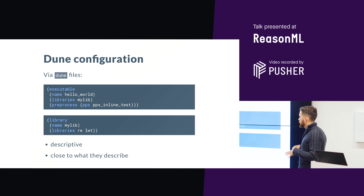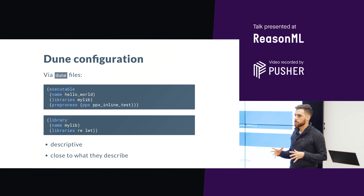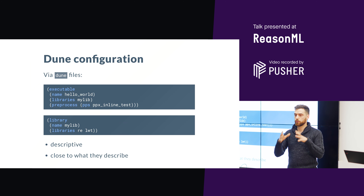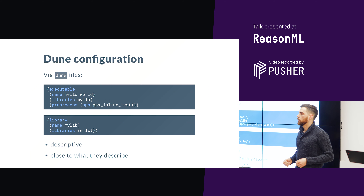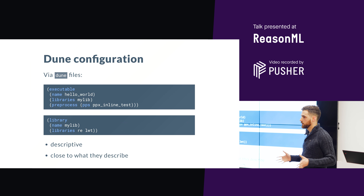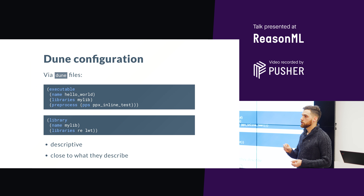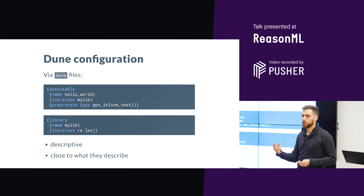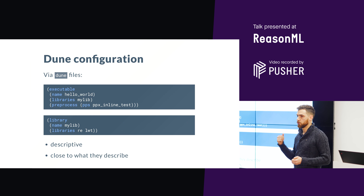The second point is that the configuration files are close to what they describe. The tool doesn't enforce any specific organization — you don't need to have a bin directory, a lib directory, etc. If you want to have a binary inside src/bin, you can do it. You just drop a dune file at any point in the tree wherever there is something Dune should know about.